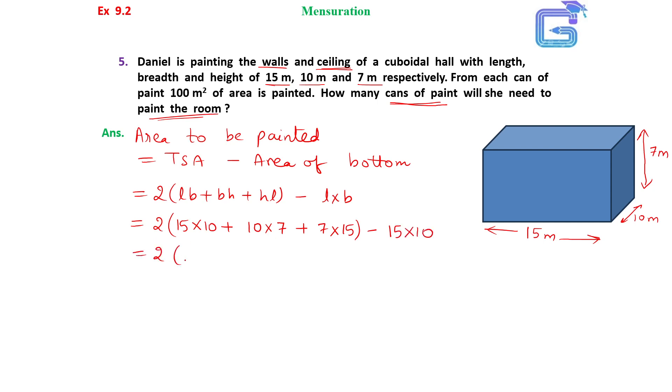15 into 10 is 150, 10 into 7 is 70, 15 into 7 is 105, minus 15 into 10 is 150.